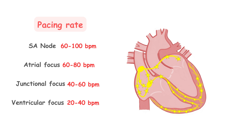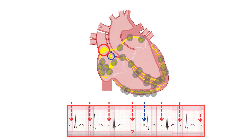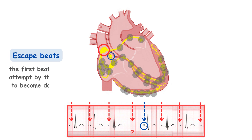Under normal conditions, all of the potential pacemakers are suppressed by the more rapid impulses coming from above. On the other hand, when the dominant pacemaker stops pacing for a brief period — usually for only one cardiac cycle — another automaticity focus from below is no longer overdrive suppressed. Because the previously dominant pacemaker starts pacing again and takes over dominance, we will see just a single beat that we call an escape beat. An escape beat represents the first beat of the attempt by the new focus to pace and become dominant, but the return of the SA node overdrive suppresses it again.